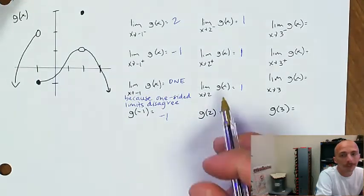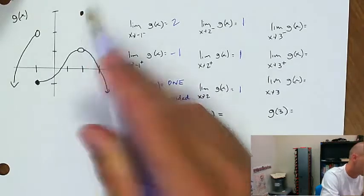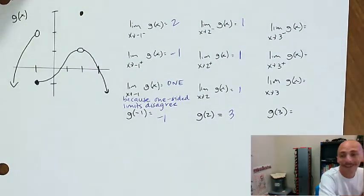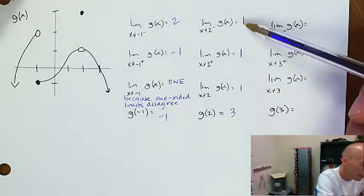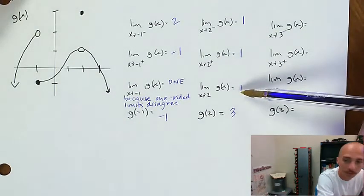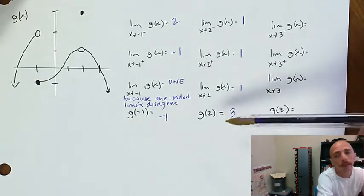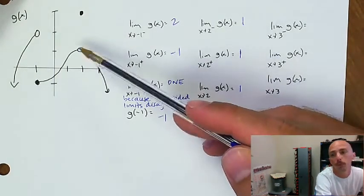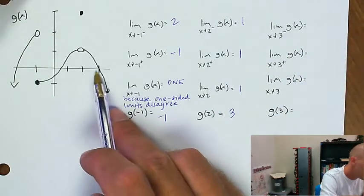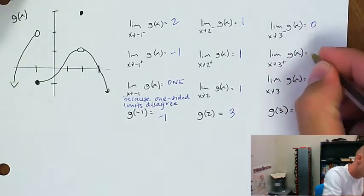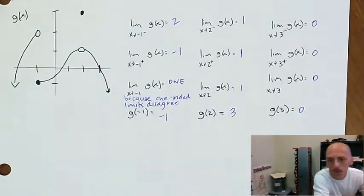But g of 2 is different from the limit of g as x approaches 2. g of 2 is where the actual filled-in circle is, and that's something like x equals 3. When the limit of a function exists but is not equal to the value of the function at that same x value, that's what we'd call a removable discontinuity. Approaching 3 from both sides gives 0, and g of 3 is 0 — the limit is 0 because it's continuous together.